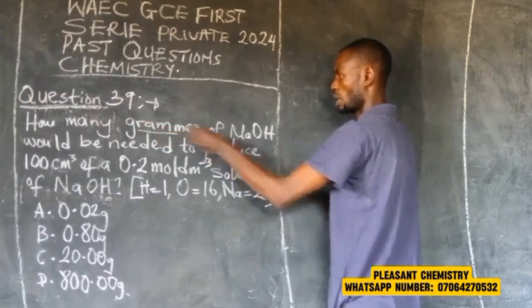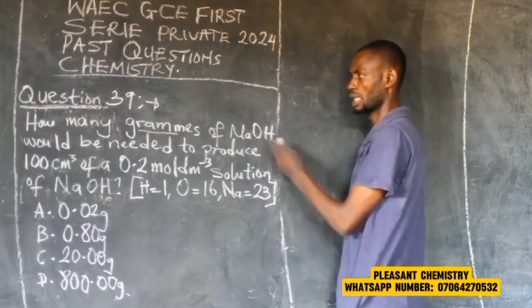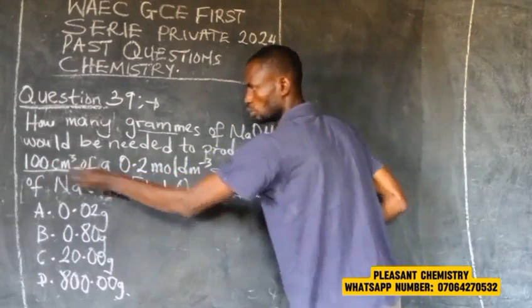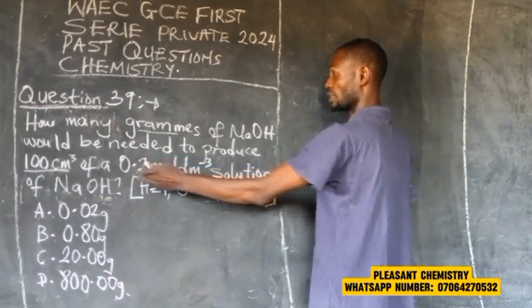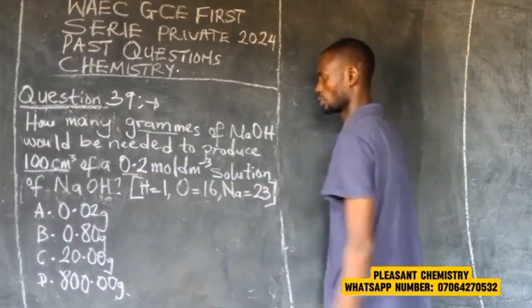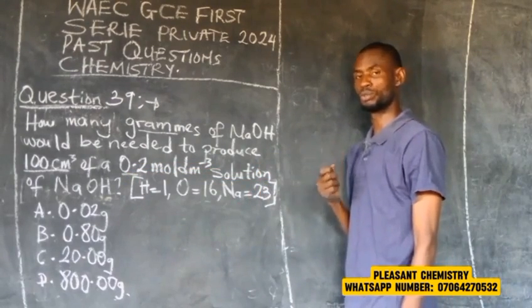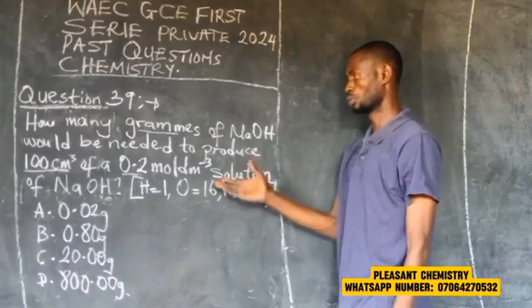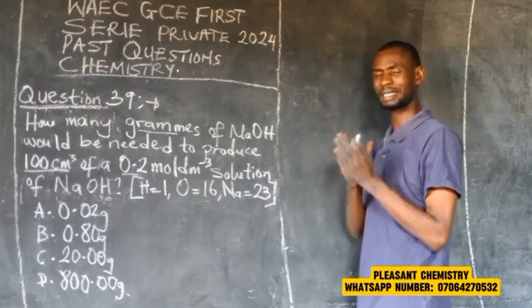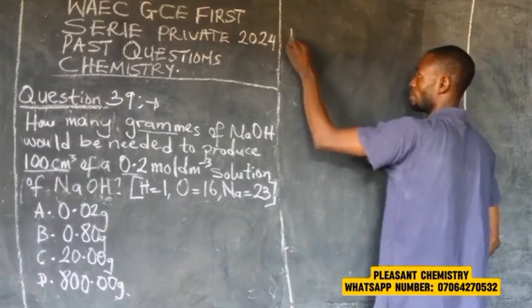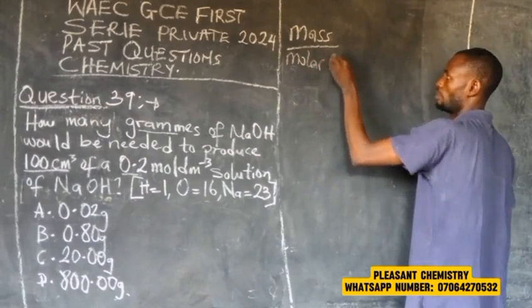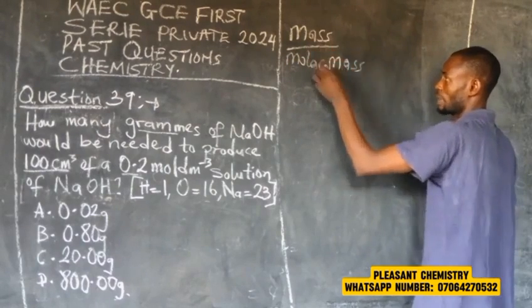Question number 39: How many grams of sodium hydroxide are needed to produce 100 cm³ of 0.2 mol/dm³ solution? There is a formula linking mass and molar concentration: mass divided by molar mass equals molarity multiplied by volume in cm³ divided by 1000.